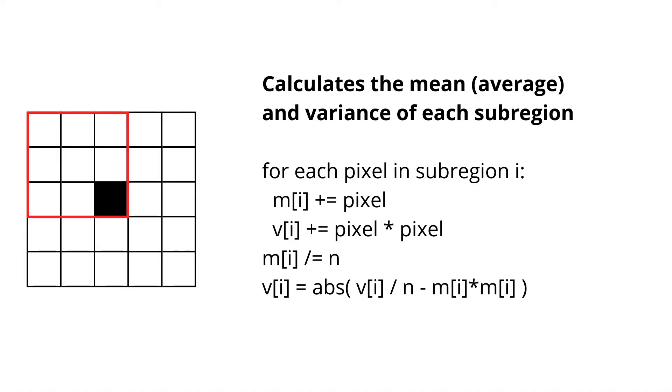We then divide m by n to get the mean of the subregion, and the v we divide by n and subtract by the square of the mean.